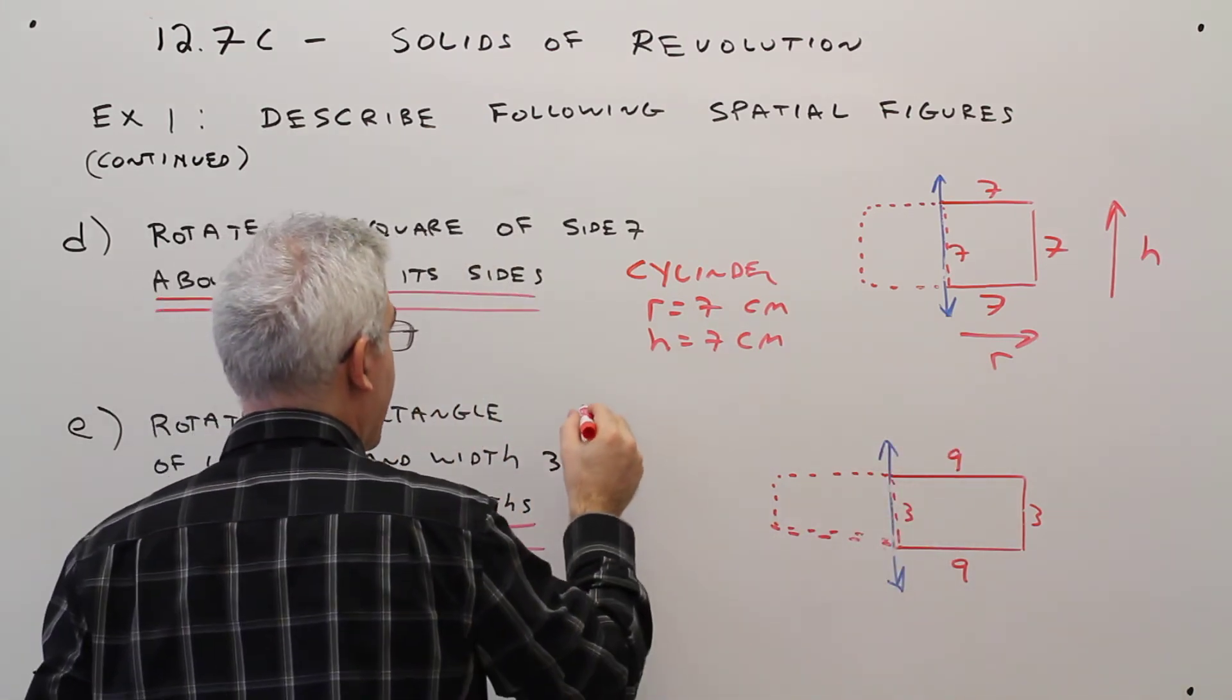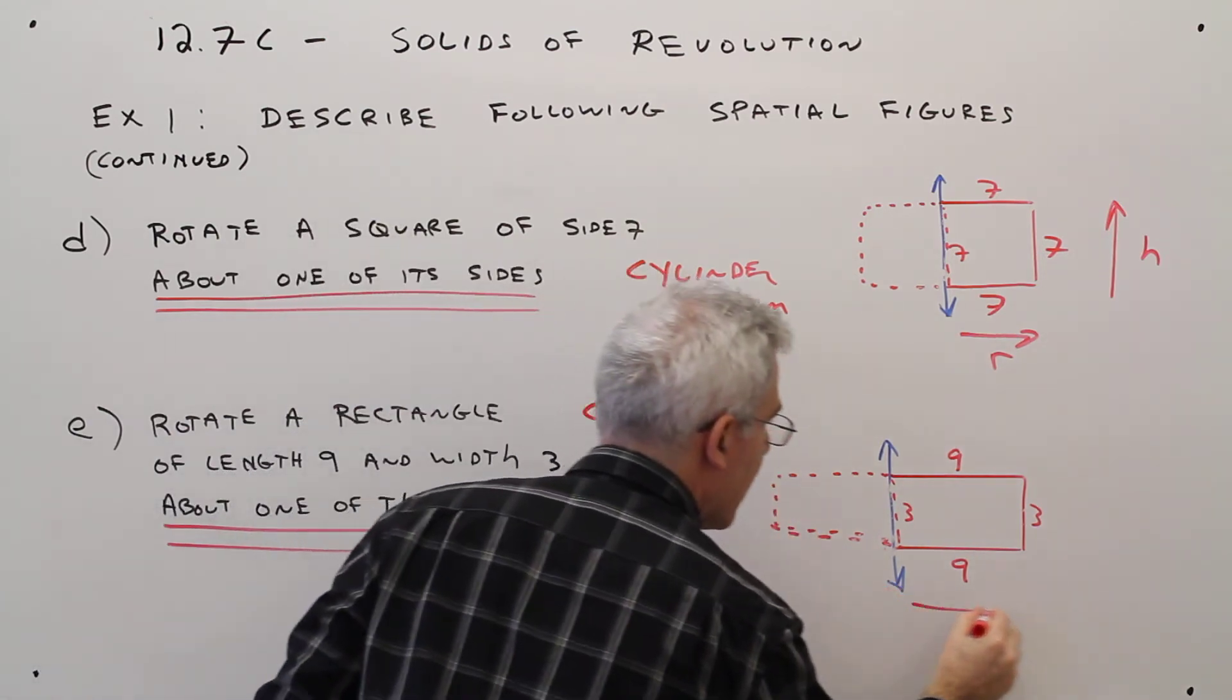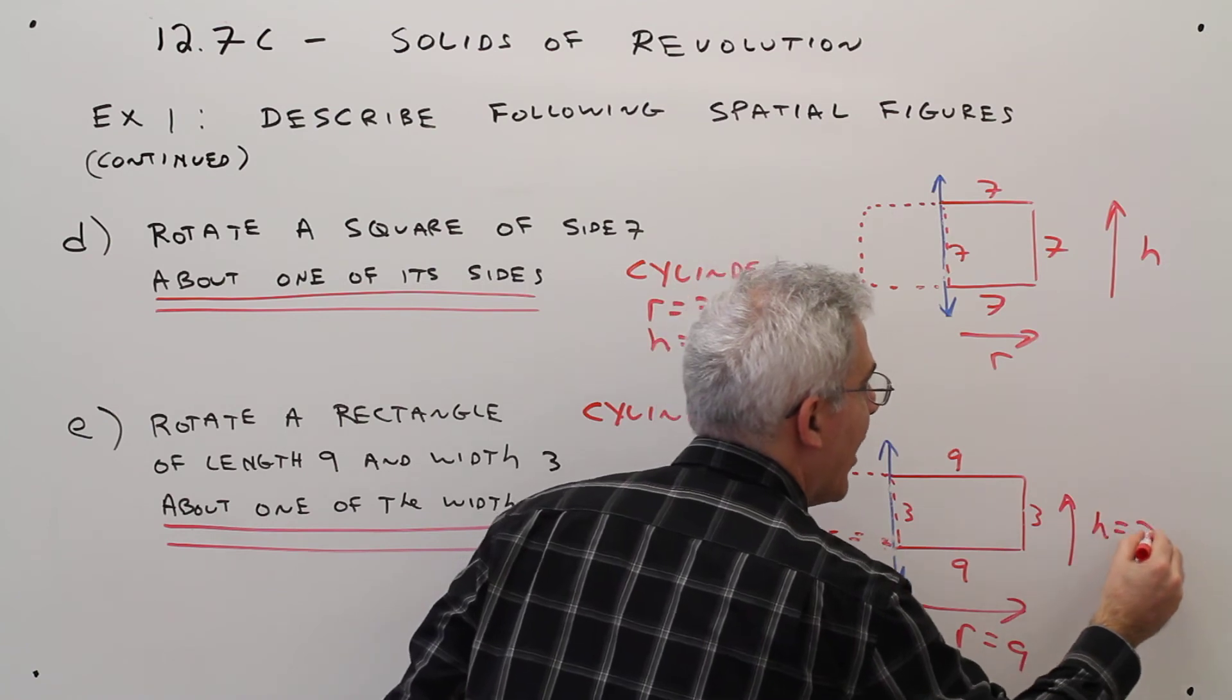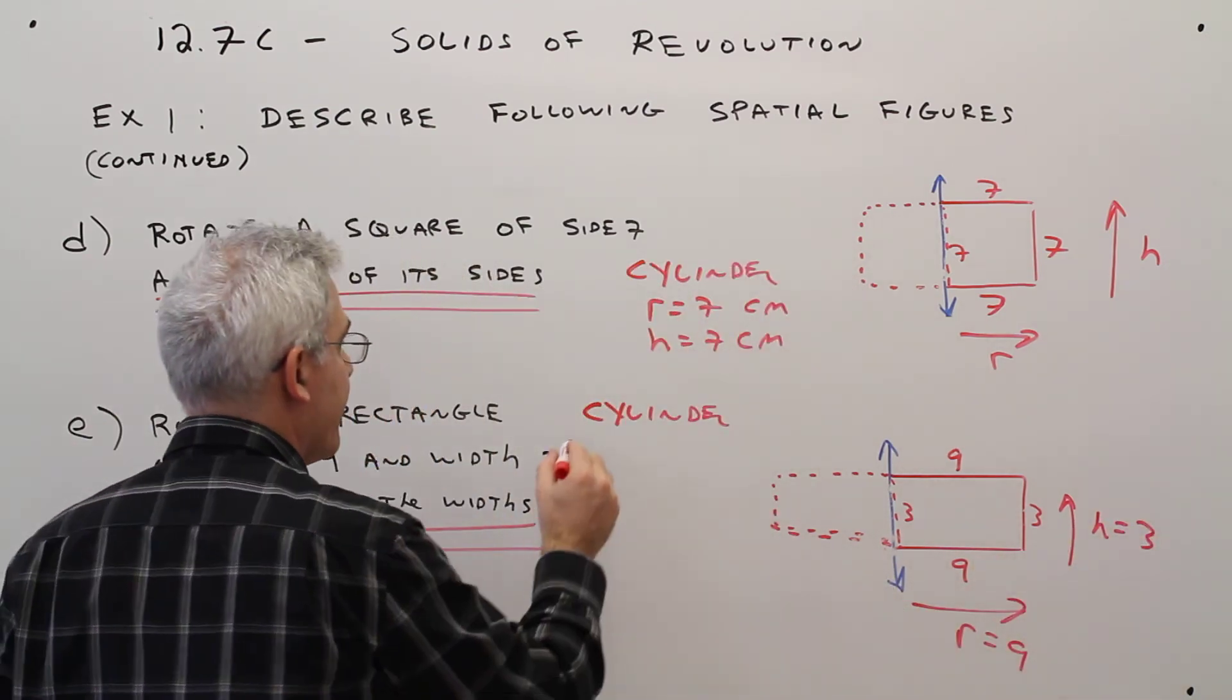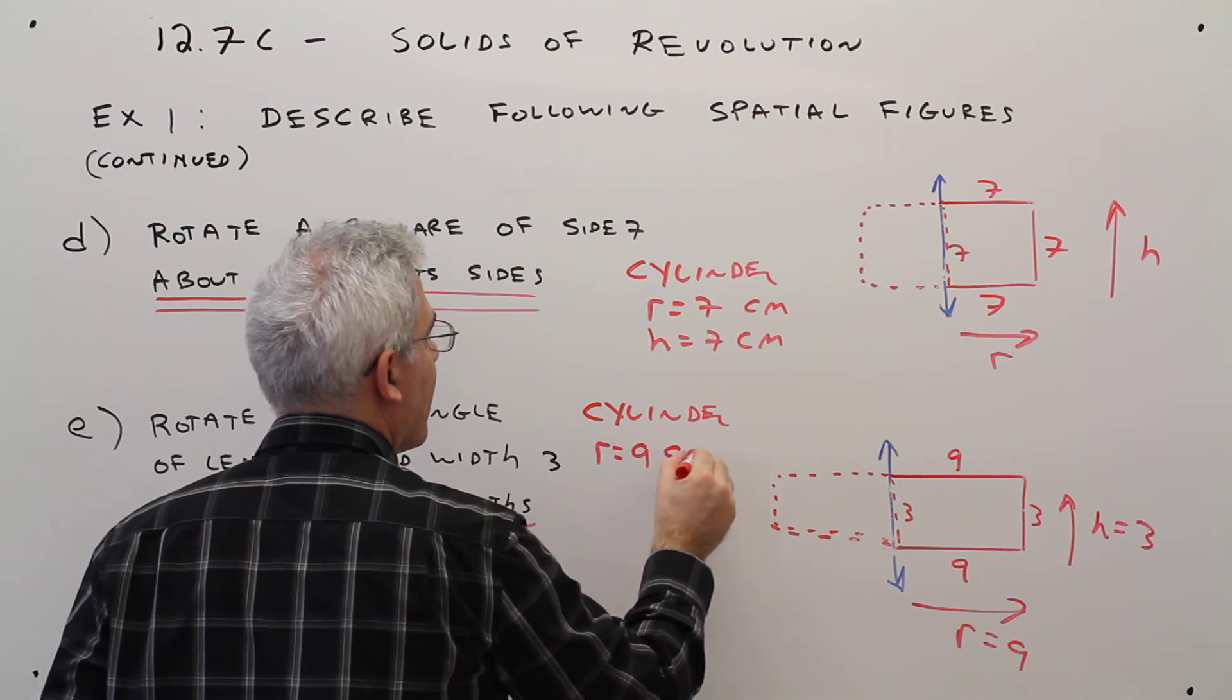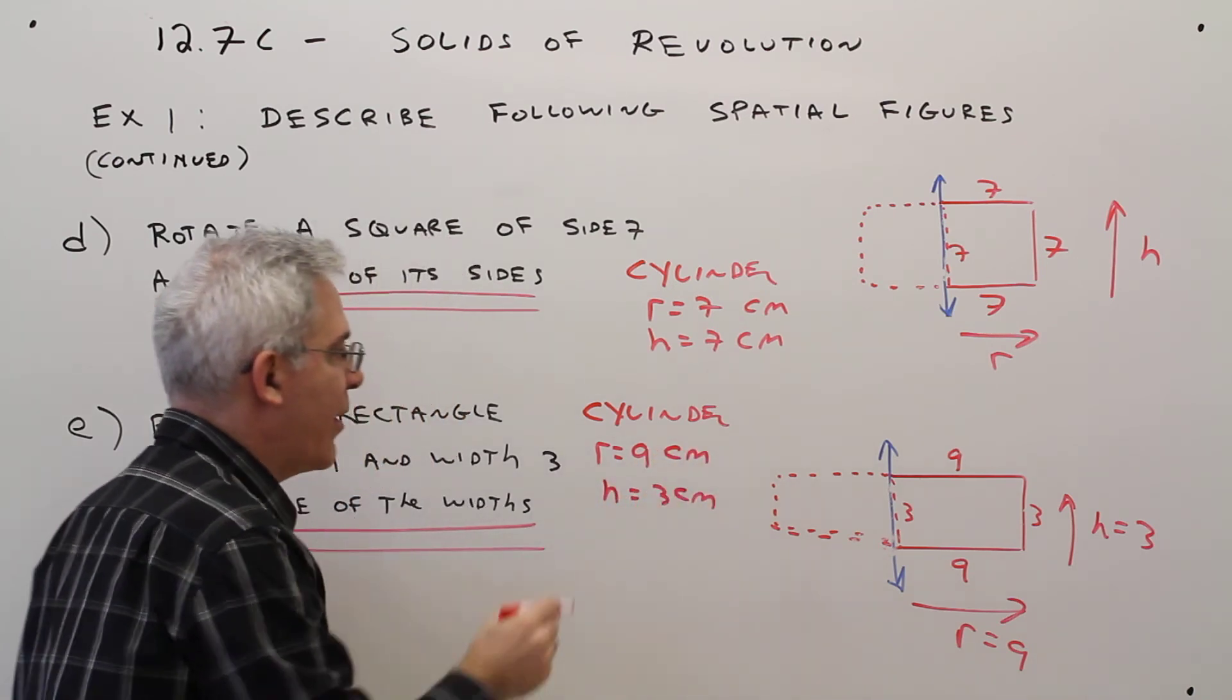So again, it's going to be a cylinder. The radius is going to be 9, and the height is going to be 3. So radius equals 9 centimeters. Height equals 3 centimeters.